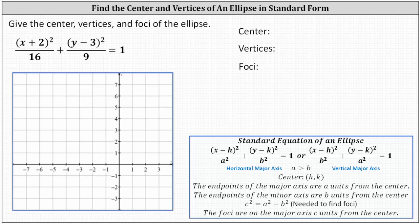We're asked to give the center, vertices, and foci of the ellipse. Before we begin, let's look at the notes below. The standard equation of an ellipse is in one of the two forms shown below, where a is greater than b, meaning a squared is the larger denominator.